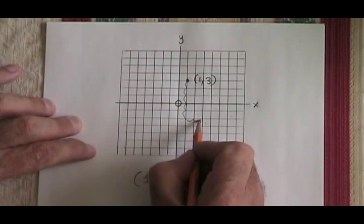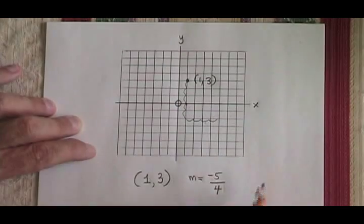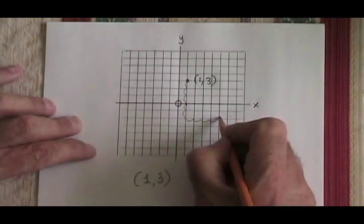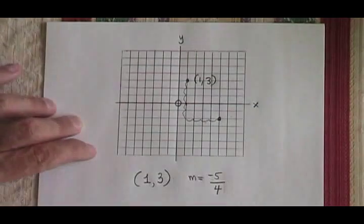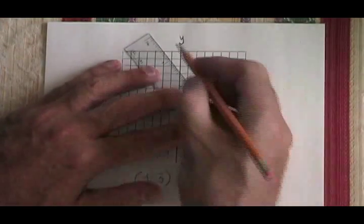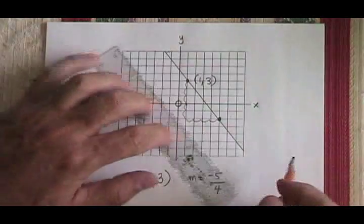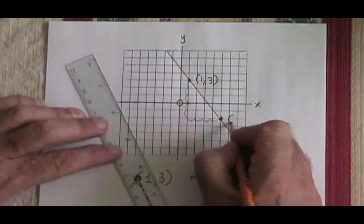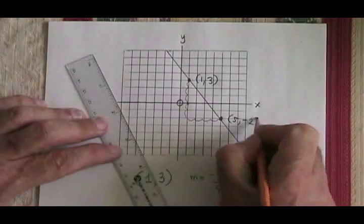I still go to the right. I don't go to the left. The denominator is positive. I found a second point that's on my line. Draw my line. Identify that point, which has the coordinates 5, negative 2. And I'm finished.